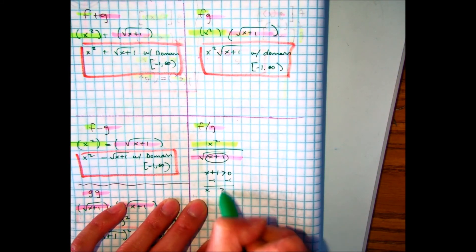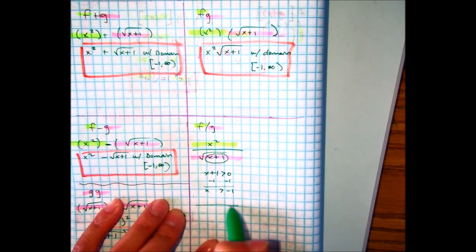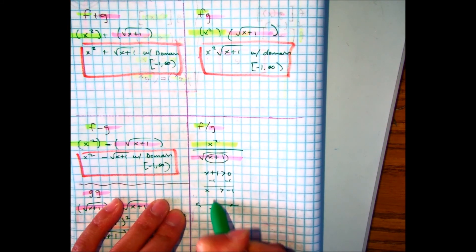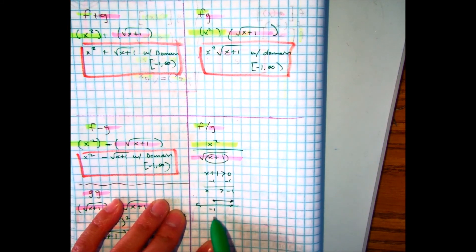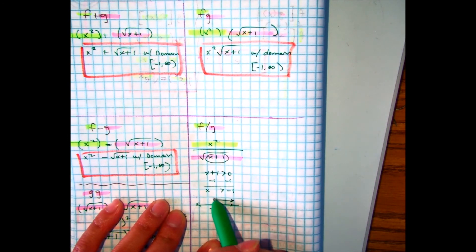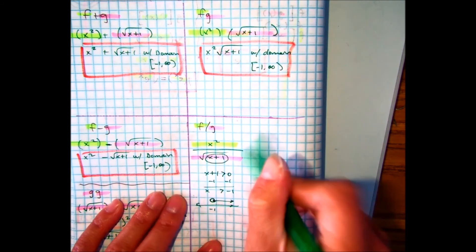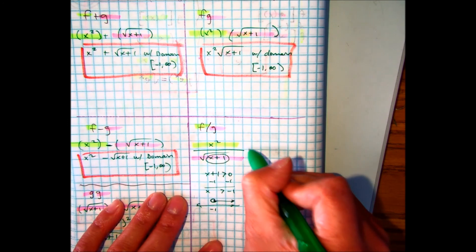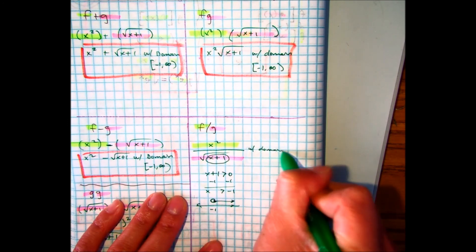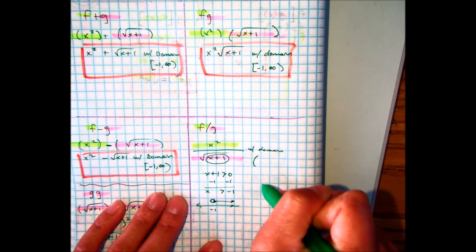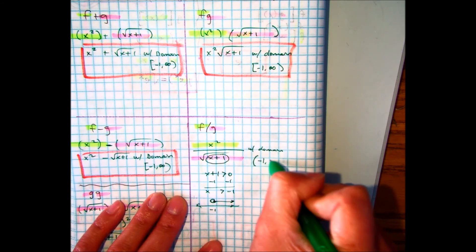So here, you're going to make it greater than 0. Subtract 1, you'll get x is greater than negative 1. On a number line, it looks like this. Sorry, that should be an open circle. And so your answer is this, with a domain, pay attention, parentheses, negative 1 to infinity.